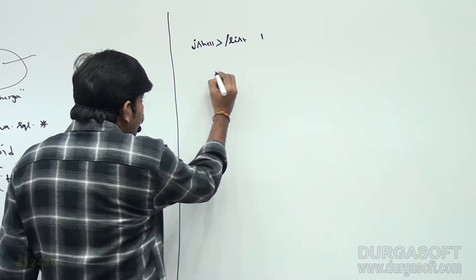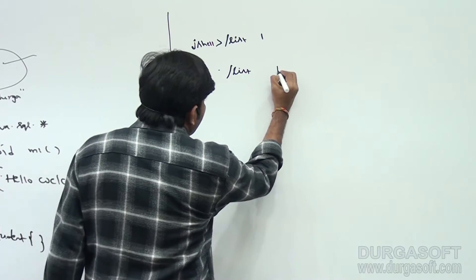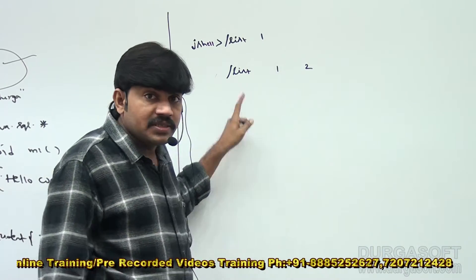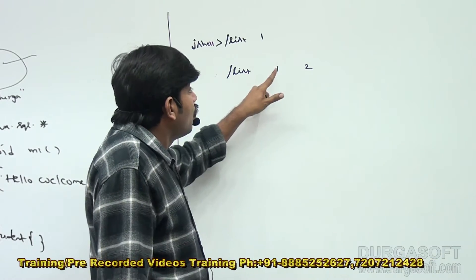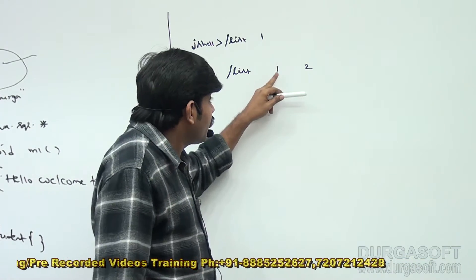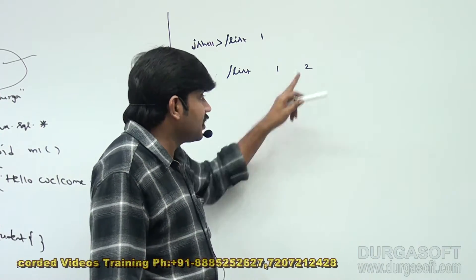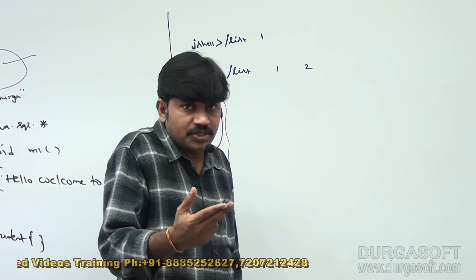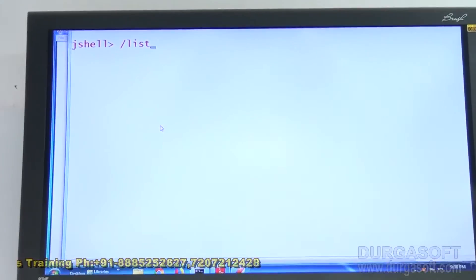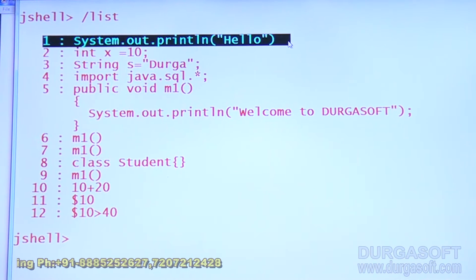With slash list 1, the first snippet — the snippet whose ID is 1 — only that particular snippet will be listed by default. Now slash list 1 2 — it is going to list not all snippets, but only snippets with ID 1 and ID 2. The corresponding snippets will be listed out. Let me check how many snippets are there using slash list.